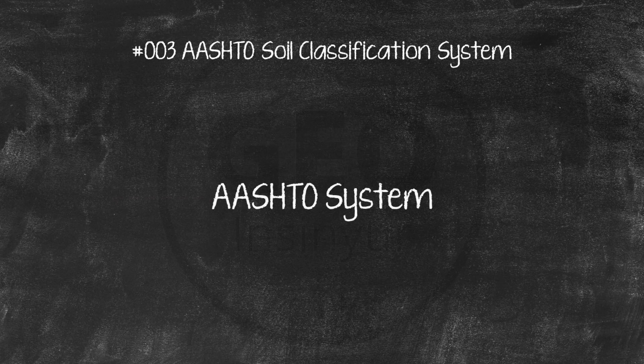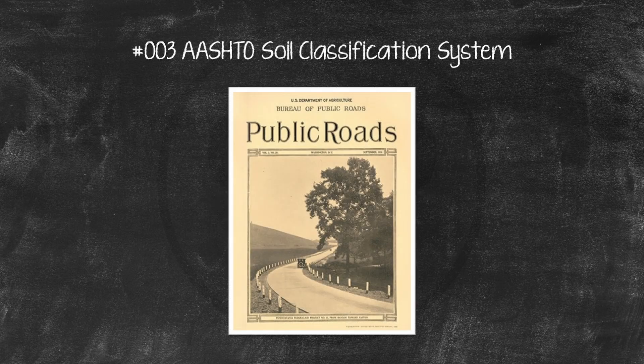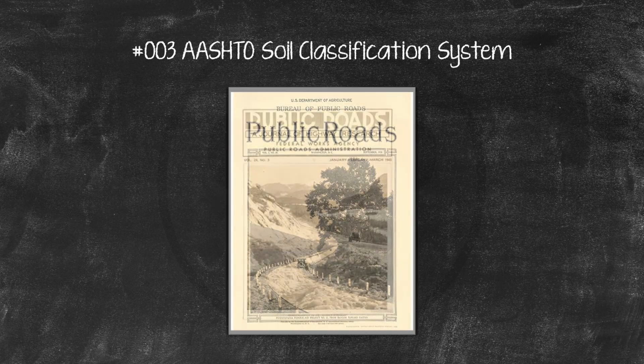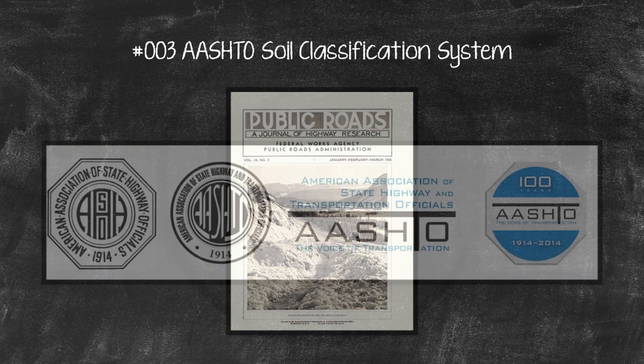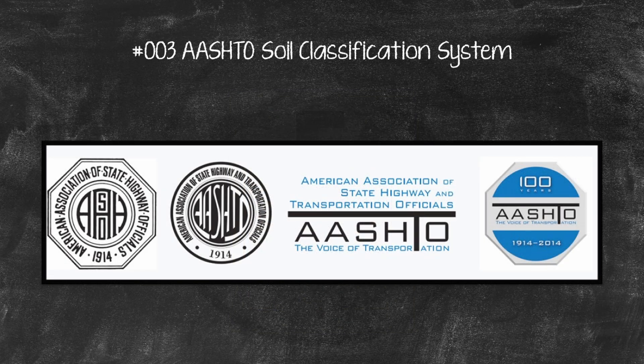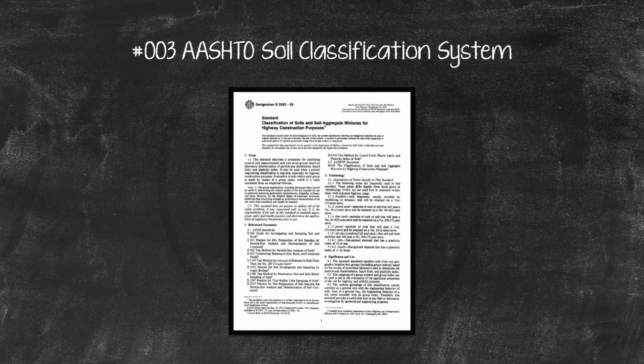This classification system was originally proposed in 1928 by the U.S. Bureau of Public Roads for use by Highway Engineers. A committee of highway engineers for the Highway Research Board met in 1945 and made an extensive revision of the PRA system. This system is known as the AASHTO System or American Association of State Highway and Transportation Officials System, ASTM D 3282, AASHTO Method M145.